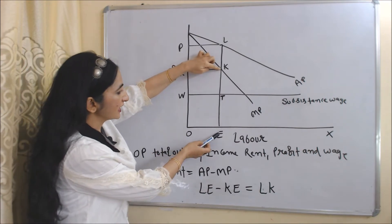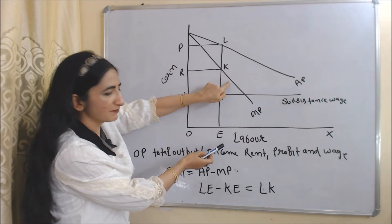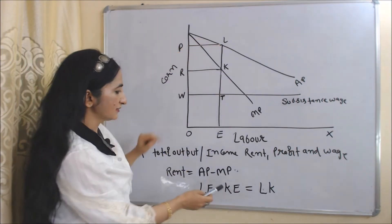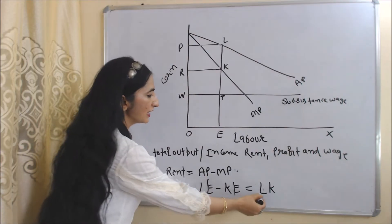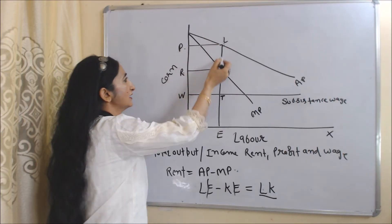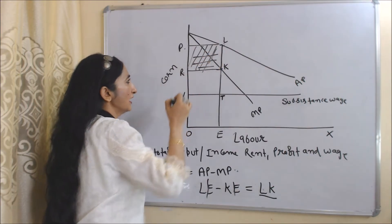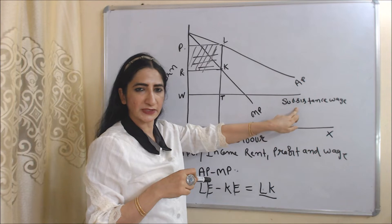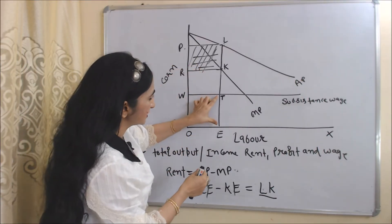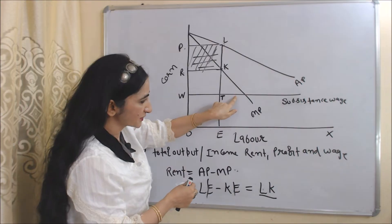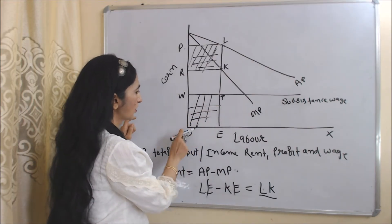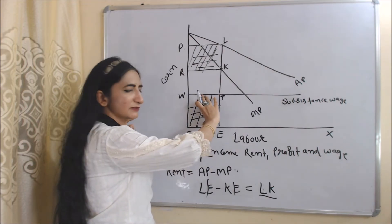According to this theory, rent is the difference between AP and MP — when we subtract marginal product from average product, it equals rent. Our marginal product is KE (point K touches the MP curve), and average product is LE. When we subtract KE from LE, it becomes LK — our per unit rent. Total rent is the area R, P, L, K. The horizontal substance wage line gives per unit wages as TE, and total wages is the area O, W, T, E.